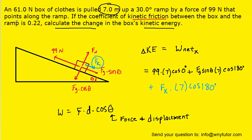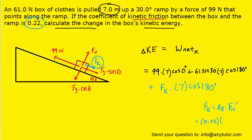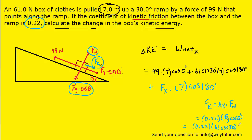The question notes that Fg is 61 newtons and the angle produced by the ramp is 30 degrees. So we fill in 61 newtons for Fg and 30 degrees for theta. The only remaining term is Fk, the kinetic frictional force. Kinetic friction equals a coefficient of friction times the normal force. The coefficient of kinetic friction is 0.22. From the free body diagram, the normal force equals Fg cos theta, since those two forces cancel. So for the normal force we fill in Fg cos theta, with Fg equal to 61 newtons and theta equal to 30 degrees. We then plug this expression for kinetic friction into our equation for net work.